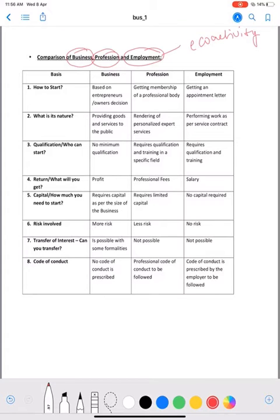One by one, let's define how we can start. Business can be started after taking the decision - anybody can start the business after taking the decision. But everybody can't enter the profession. For entering in the profession, we must get some membership or some degree. In the same way, employment requires getting an appointment letter from the employer.